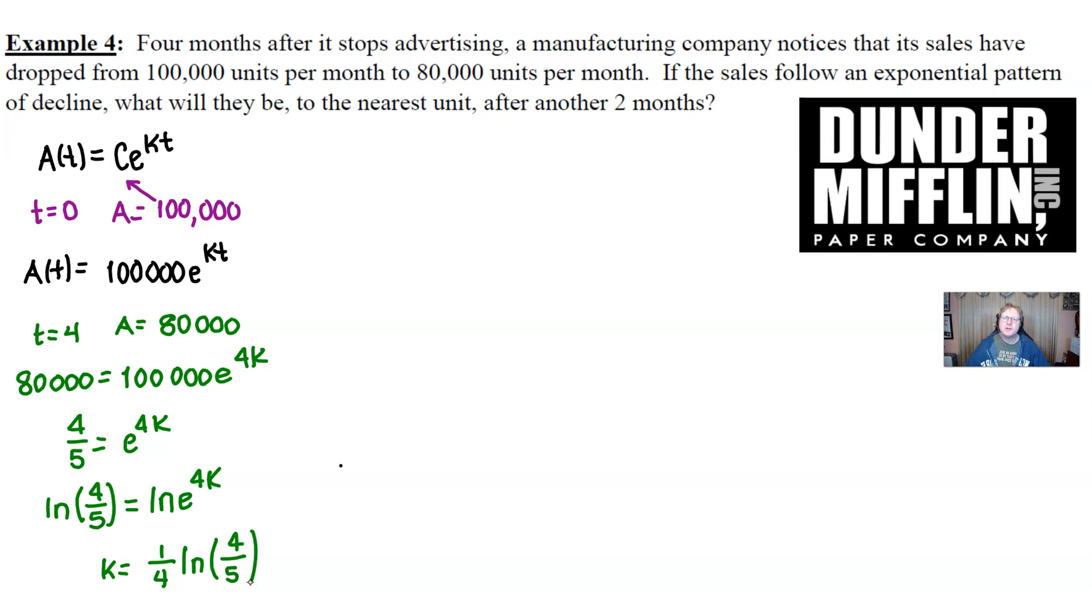But it would perfectly be suitable for a free response question. You would earn full credit for this. So what do we have now? What's A of T really looking like? Well, A of T is 100,000 times e to the one fourth natural log of four fifths times T power. And as we've said many times, you could very easily simplify this exponent if you wanted to. Or you could just dive right in and plug in the T value and compute what you're supposed to compute, which is this A of T. I'm going to go ahead and simplify this to get rid of the e just for the practice.